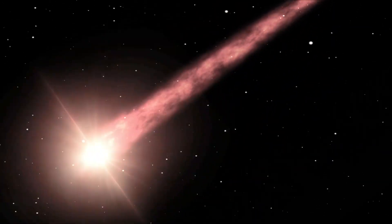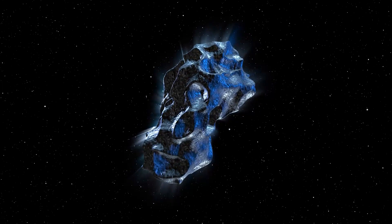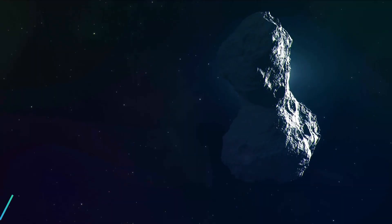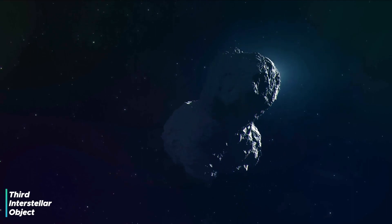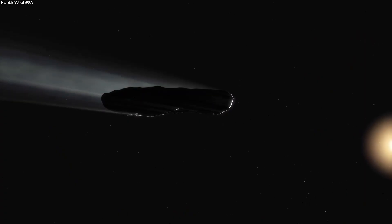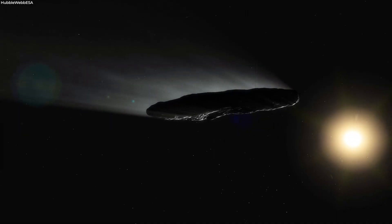This is probably the Comet Nishimura's first and only journey through the inner solar system due to its orbit. The possibility exists that the comet originated outside of our star system, making it the third interstellar object to have been discovered after Comet 2I/Borisov and Oumuamua, which some astronomers speculated might have been an alien spacecraft.